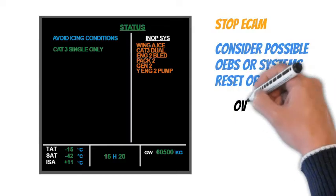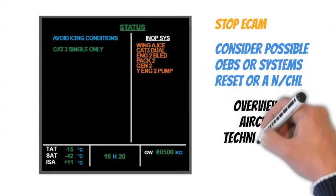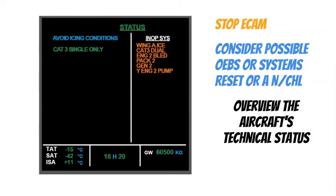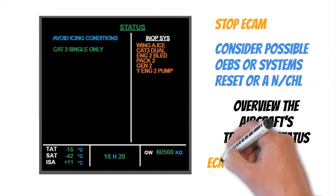The purpose of the status page is to overview the aircraft's technical status in all remaining flight phases. Therefore, the flight crew must check the whole status page information to assess the situation and make the appropriate decision correctly.